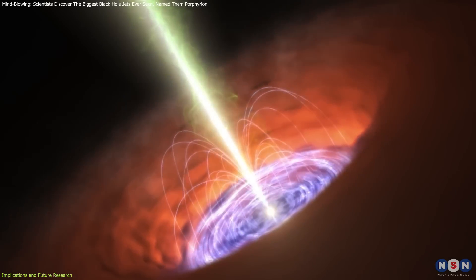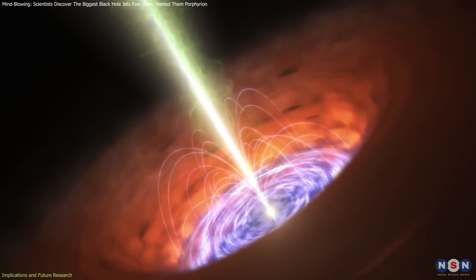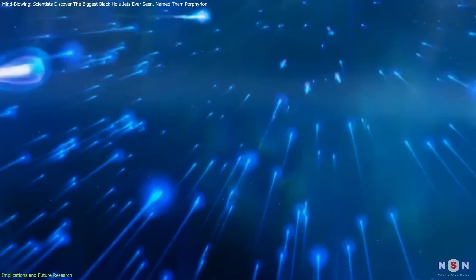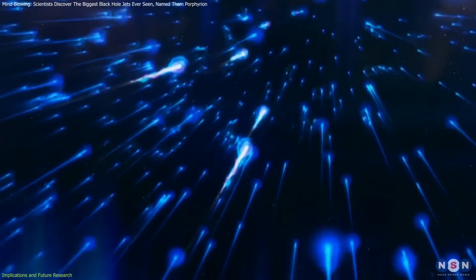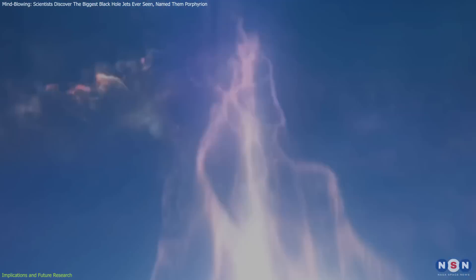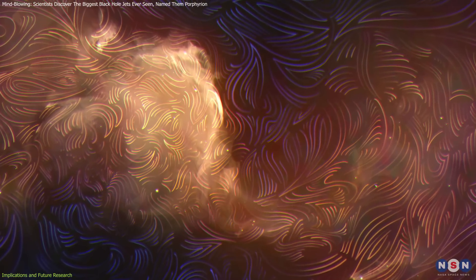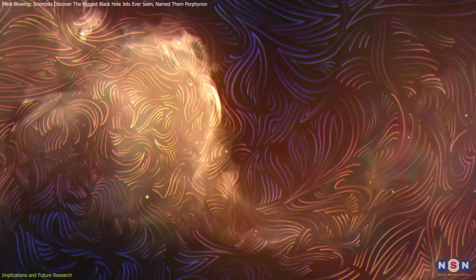Moreover, jets like Porphyrion are thought to spread magnetic fields, cosmic rays, and other high-energy particles across enormous distances, potentially playing a significant role in how magnetism permeates the universe.